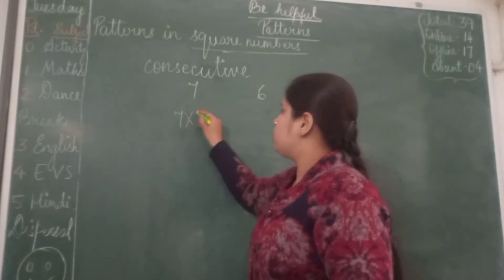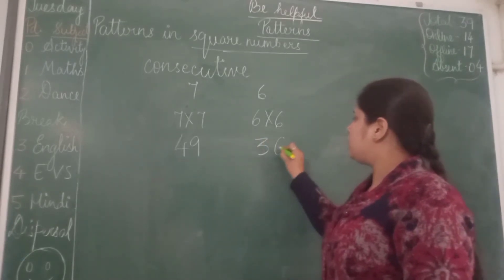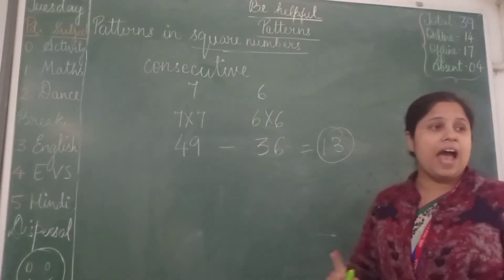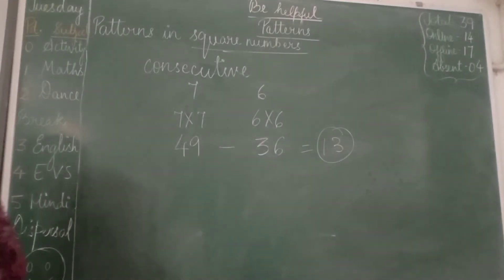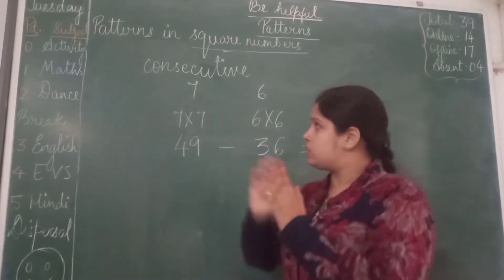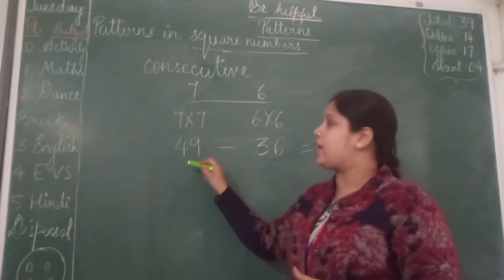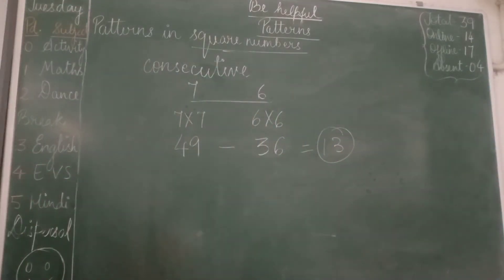So here the number comes 49, here the number comes 36. We will subtract and we will get 13 which is an odd number. So whenever we are subtracting two consecutive squares of numbers - the numbers should be consecutive, not the squares - consecutive numbers' squares, if we subtract them, then we will always get an odd number. So this was another property of square numbers.